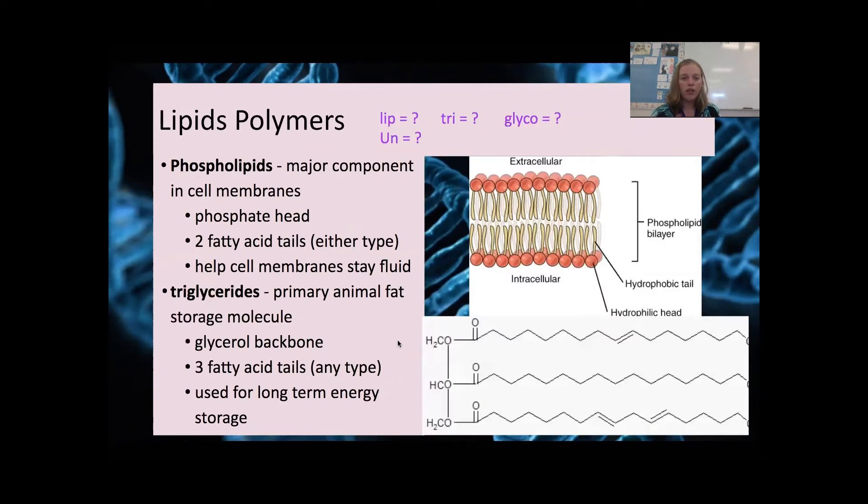Lipid polymers, we mentioned phospholipids on the last slide, so phospholipids are a major component in cell membranes. I mentioned the phosphate head and the two fatty acid tails. Those don't always have to be saturated and unsaturated. You can mix that up and have two unsaturated or two saturated as well, but they do help your membrane stay fluid and movable, so I can do this because I have lipids like cholesterol, for example, in the diet.